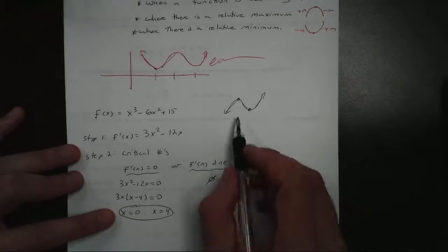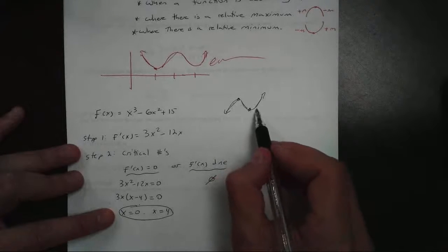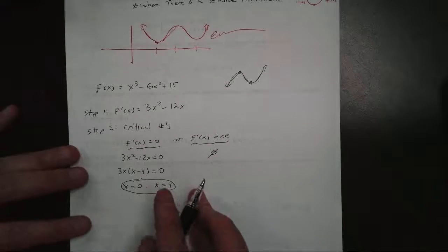So my only critical numbers are zero and four. So what that's telling me is that zero and four, something's happening to the graph. And in this case, we're going to get our turning points. We'll find out that in just a few moments.